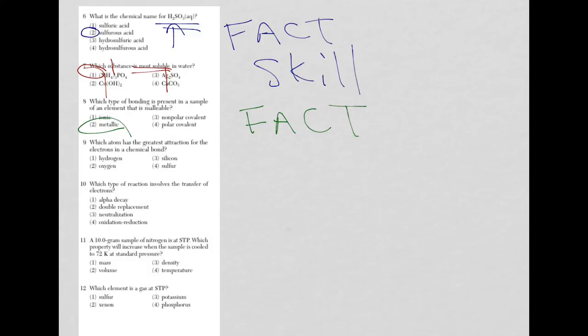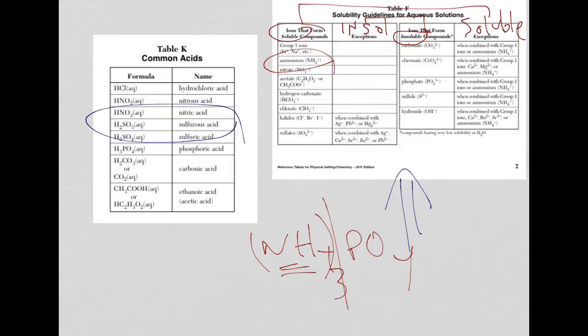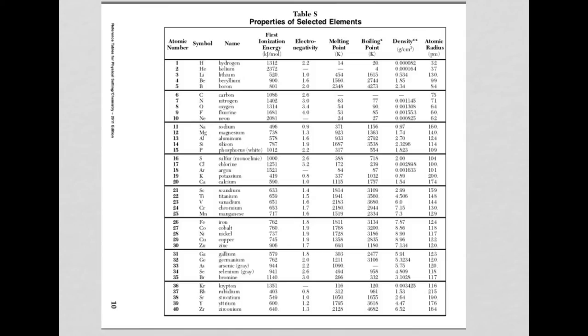Question 9: Which atom has the greatest attraction for electrons in a chemical bond? The greatest attraction for electrons, by definition, means electronegativity. That's the definition, so you have to realize you're looking for electronegativity. Then, it's really a definition and a skill because electronegativities are listed on reference table S. So, if we take a look and flip through to reference table S, what are we dealing with?